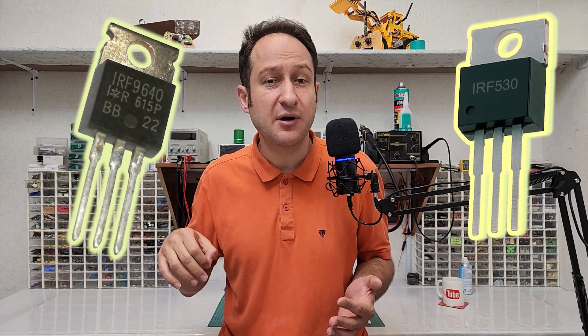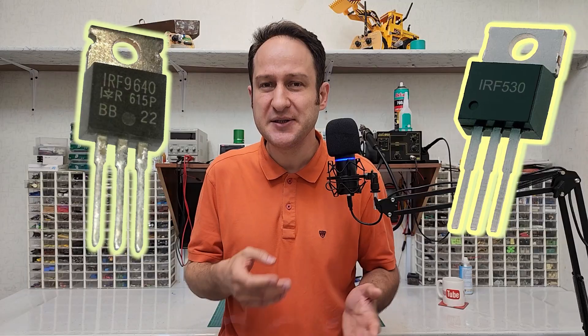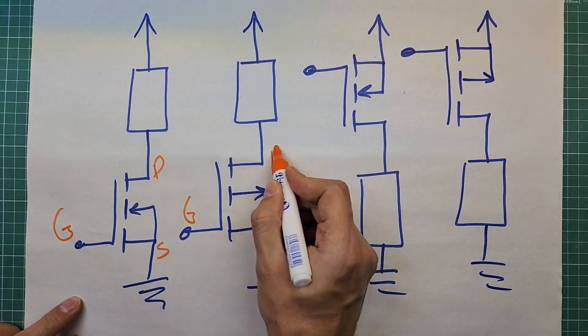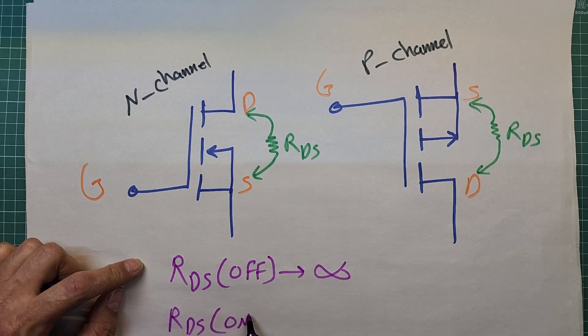Think of a project where you have to use a transistor as a switch, and after considering some reasons you decided to use a MOSFET rather than a BJT. Now you have doubts about choosing between a P-channel and an N-channel MOSFET. In this video we will see where we have to use an N-channel and when we need to use a P-channel, discussing practical, technical, and non-technical differences between them.